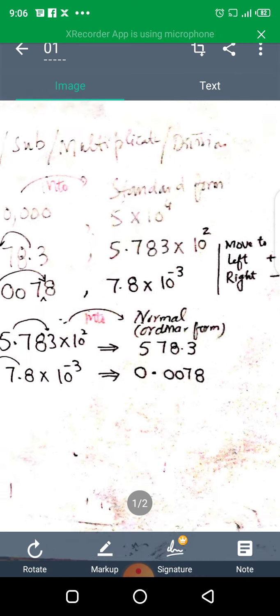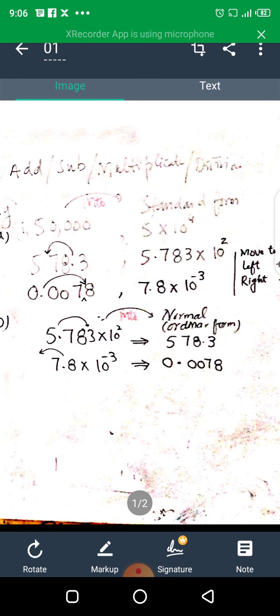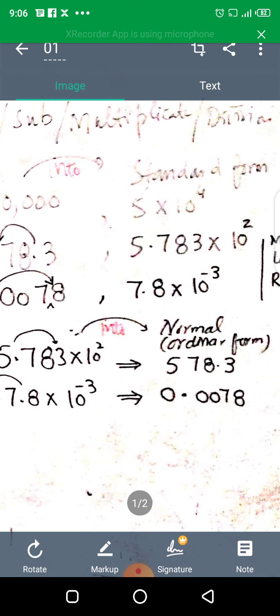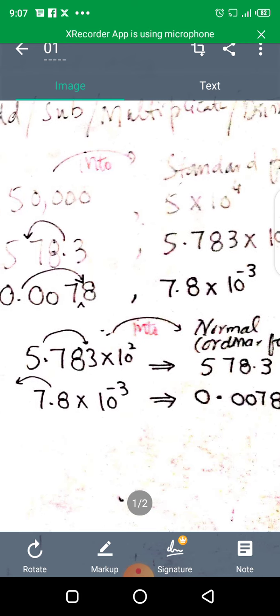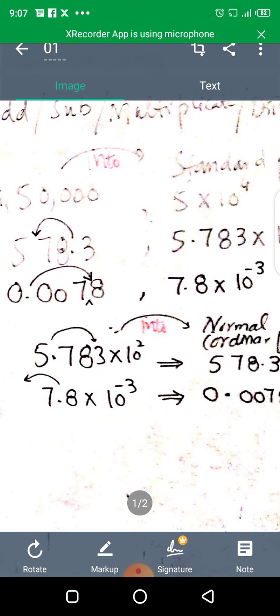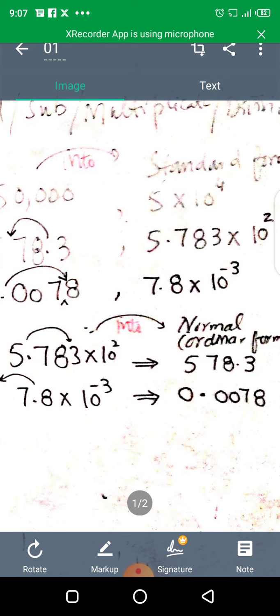Now the next one is 0.0078. The value is less than one. If we move left, the power will be positive. If we move right, the power is negative. So we will write that 7.8 multiply by ten raised to power minus three.